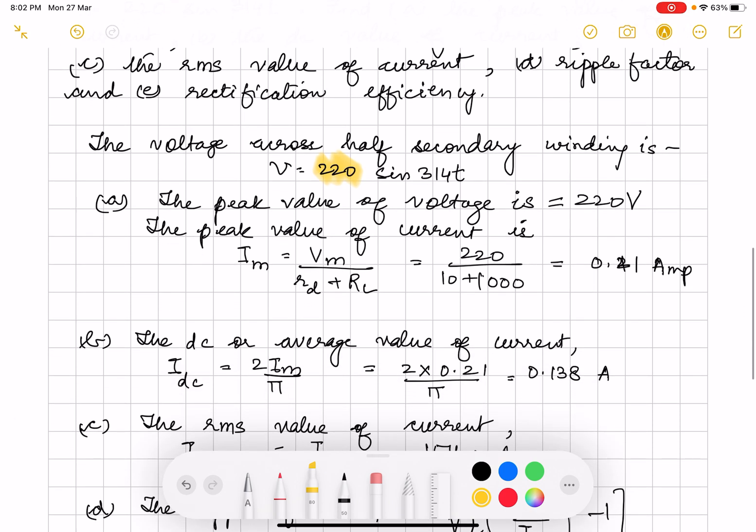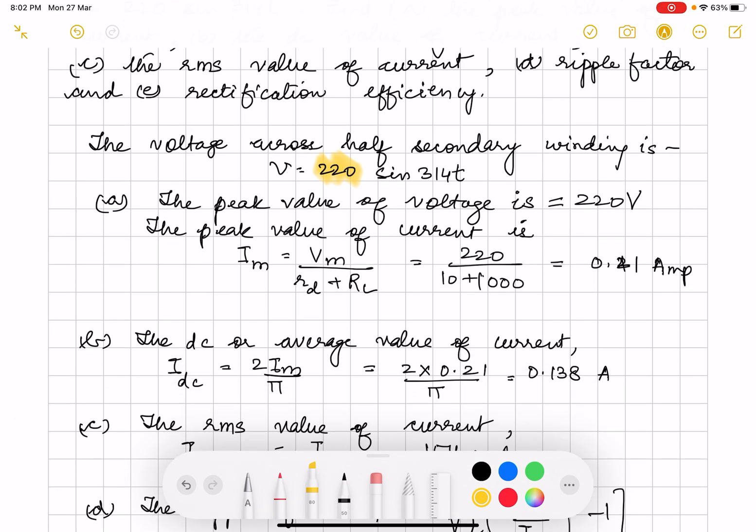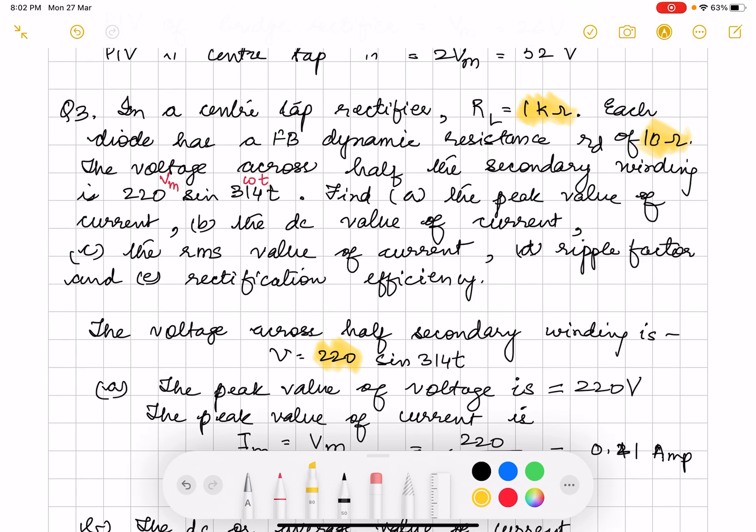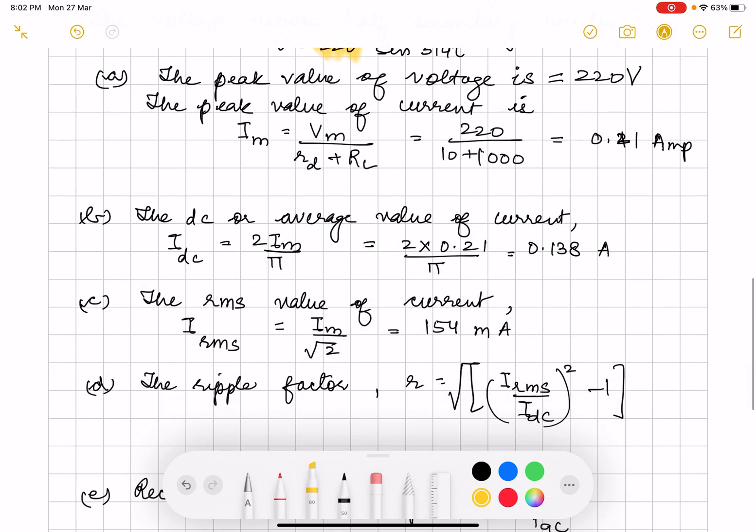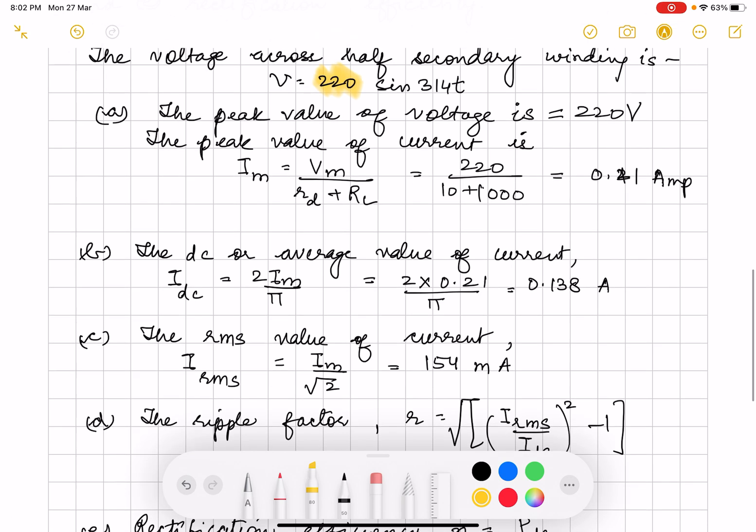Then the DC or average value of current in case of center tap is given as 2im by pi. Aap value substitute karenge. RMS value of current is im by root 2 because it is a sine wave.